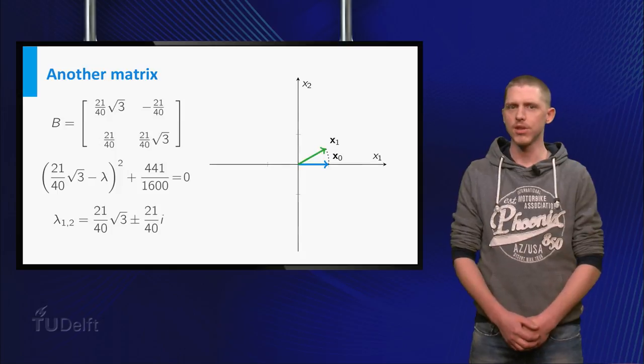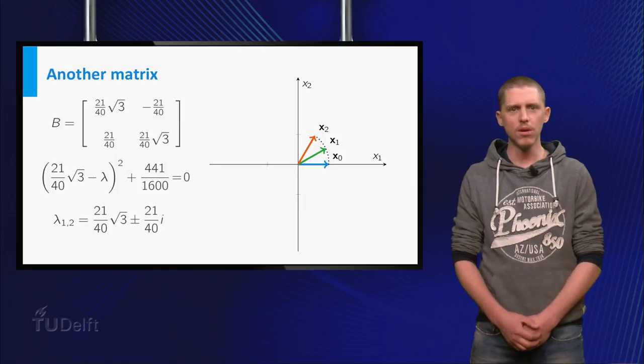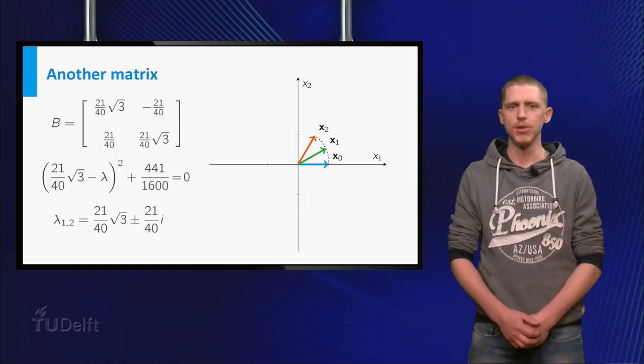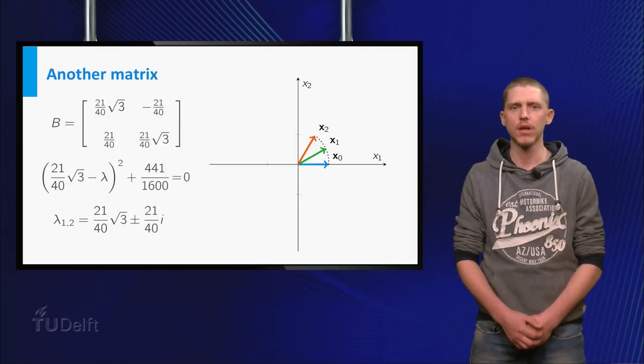B times x gives the green vector x1. If you multiply B and x1, you get the orange vector x2. For clarity, we now only draw the heads of the new vectors.